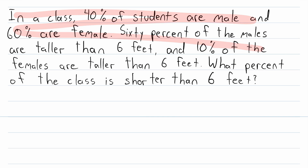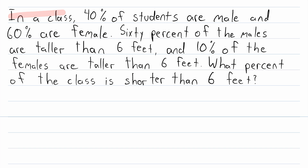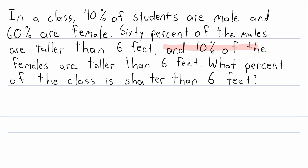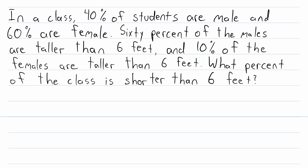Here's a practice exercise to try on your own using the law of total probability: in a class, 40% of students are male and 60% are female. 60% of the males are taller than six feet, and 10% of the females are taller than six feet. What percent of the class is shorter than six feet? Let me know how it goes down in the comments — I'll leave the solution in the description.